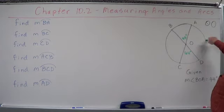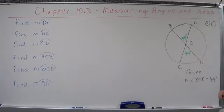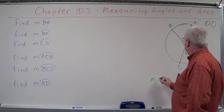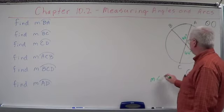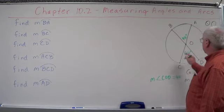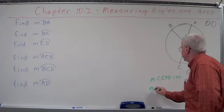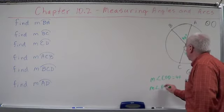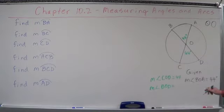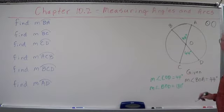What do we know about angle BOD? So we know, okay, let's go ahead and put this down here. Measure of angle COD equals 44. What do we know about the measure of angle BOD? Well, that's a diameter, so that has to equal 180 degrees.